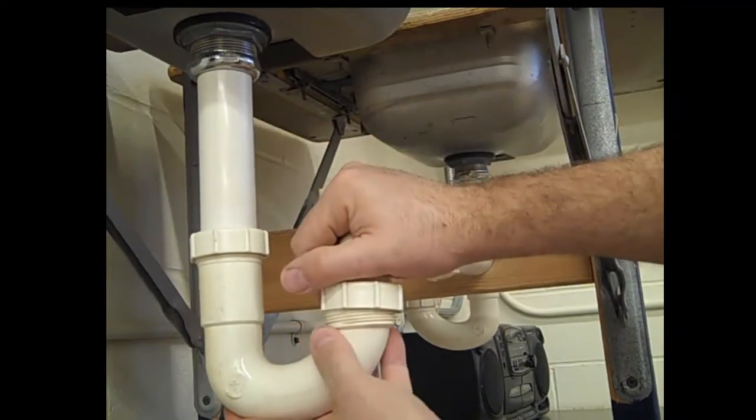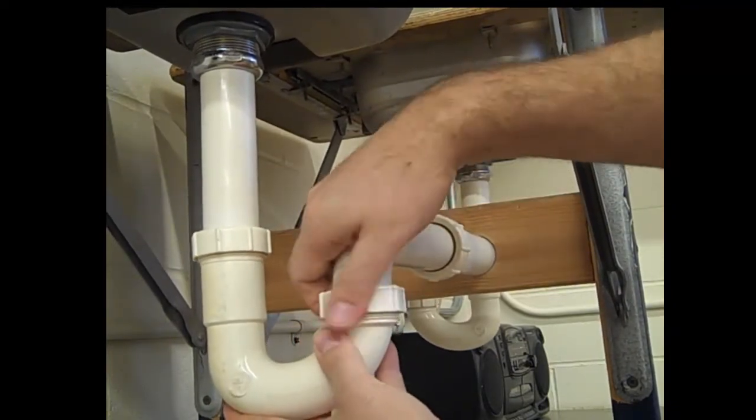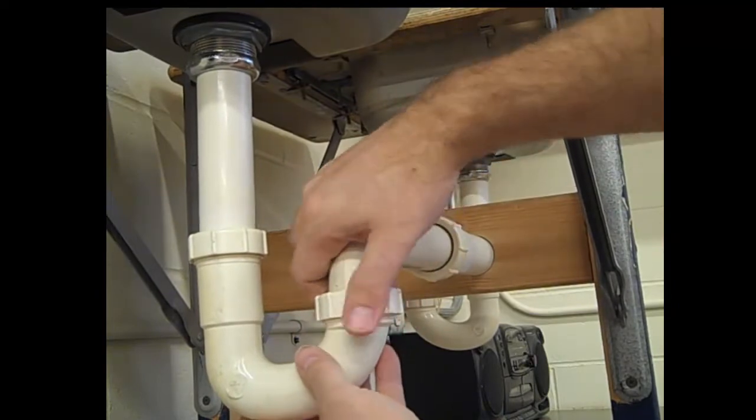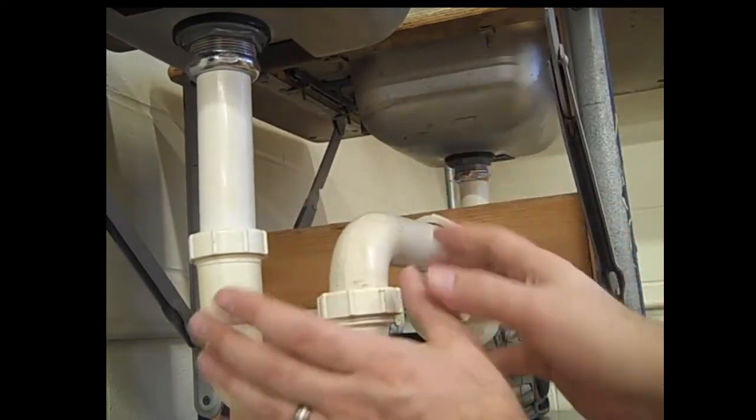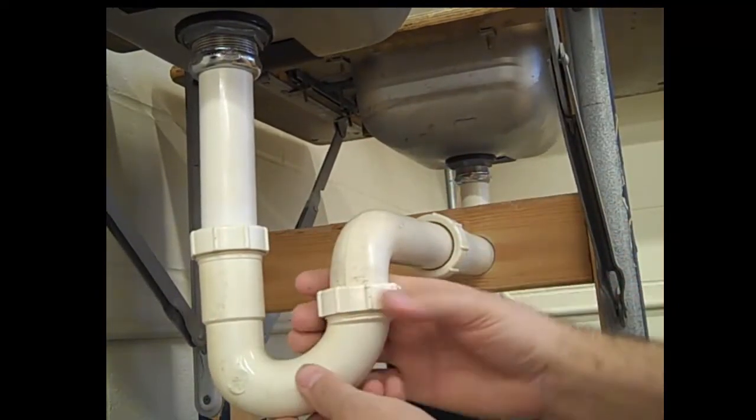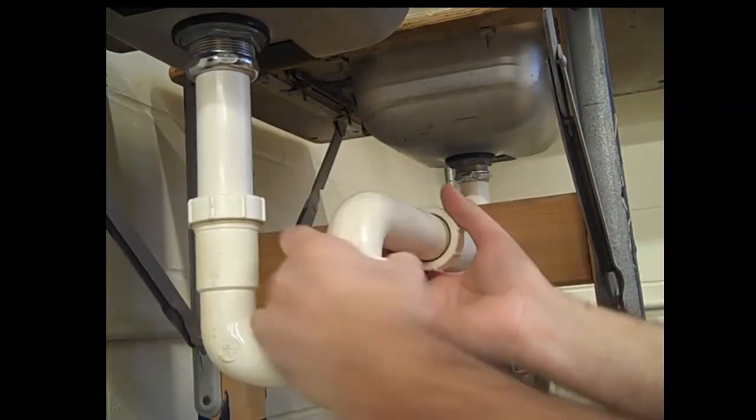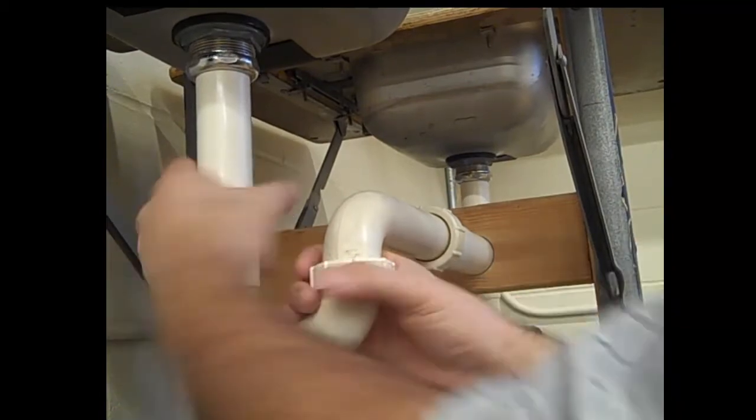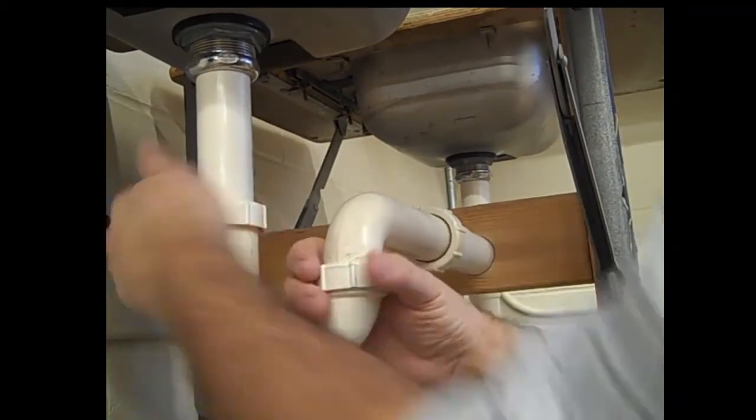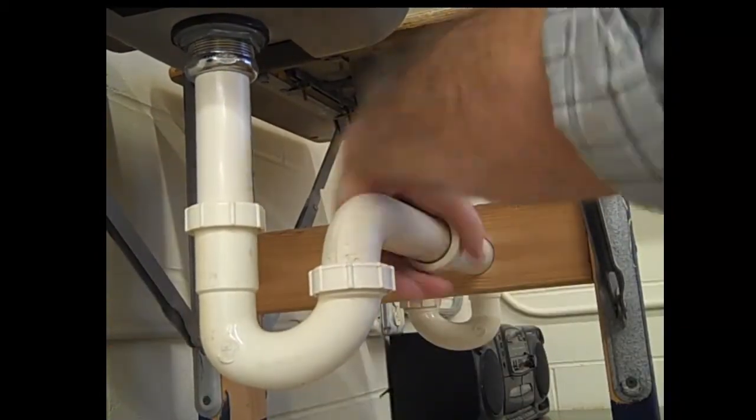Thread that together. Slide these two so they line up. Thread this together. Once all the pieces are lined up and all the threads are started, it's time to push this together. Push these in as far as they'll go. Then you can tighten these up by hand. You don't have to go crazy tight, but you should tighten them.